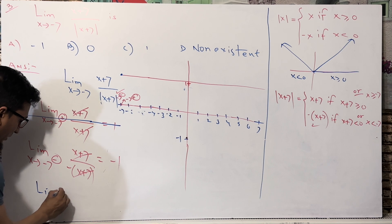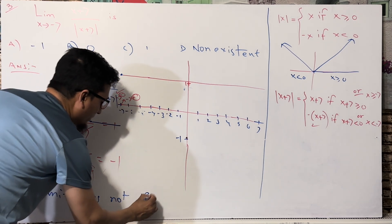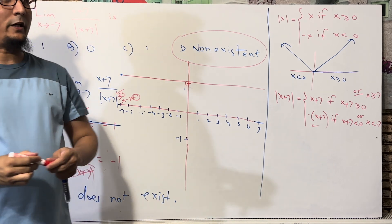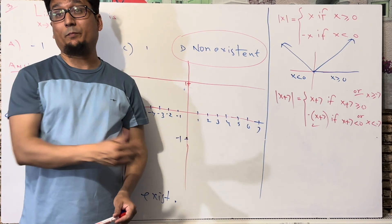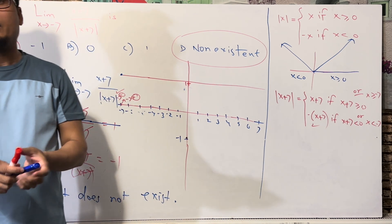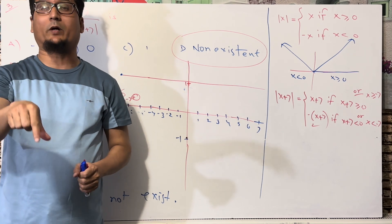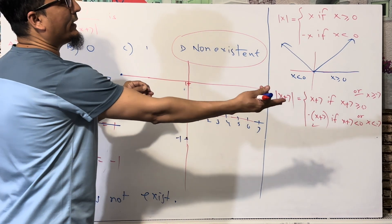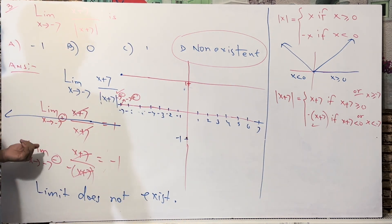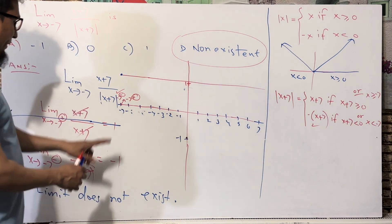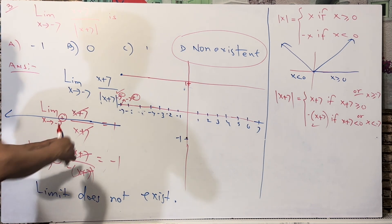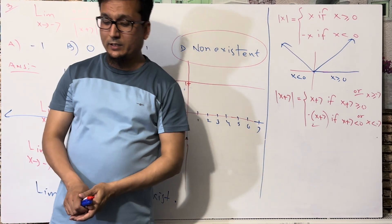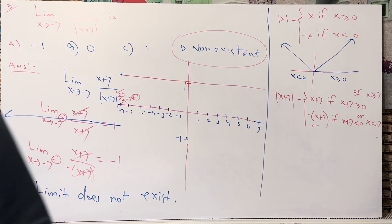Therefore the limit does not exist, and answer D is correct. In limits, if the right-hand limit (RHL) and left-hand limit (LHL) are equal, then the limit exists. If they are not equal, the limit does not exist. Here, the right side gives plus 1 and the left side gives minus 1, so the limit does not exist. Answer D is correct. I hope you all understand. If you have problems, write in the comments and we will discuss it. Salam Alaikum.